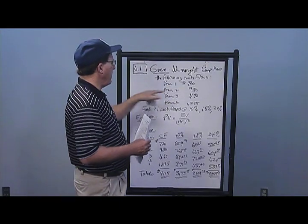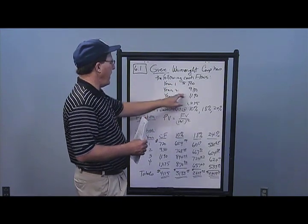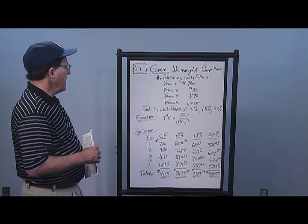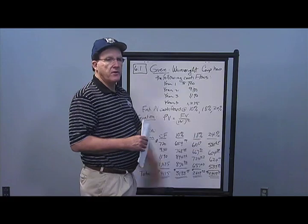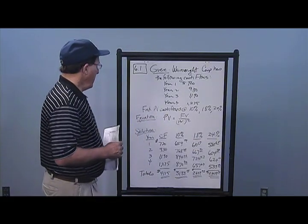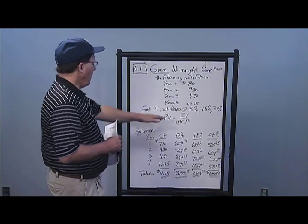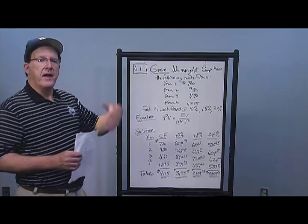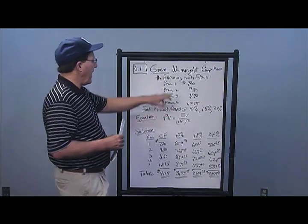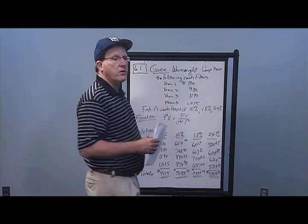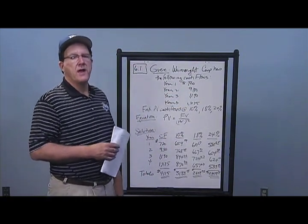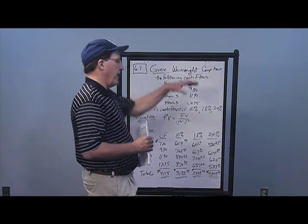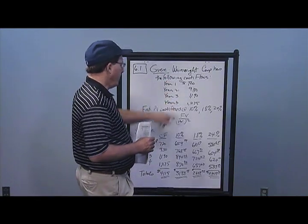So bring these back to today: this one we bring back one year, this one two years, the third one three years, and the fourth one four years. The equation is present value equals future value over (1 + R) to the T. We have to go back to Chapter 5 because we do not have an annuity — we can't use any annuity formulas from Chapter 6, since these cash flows are all different.